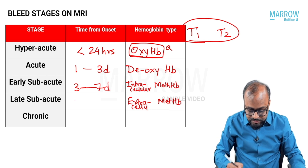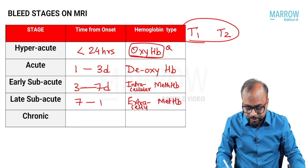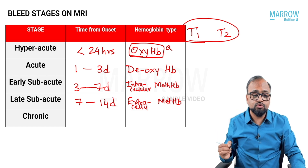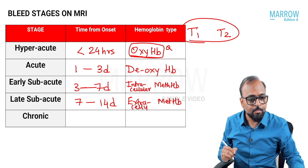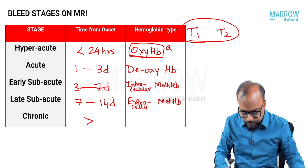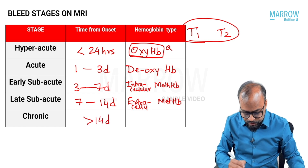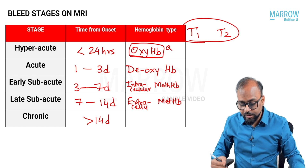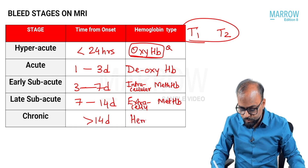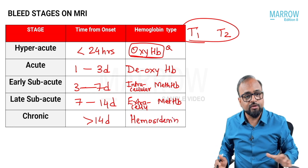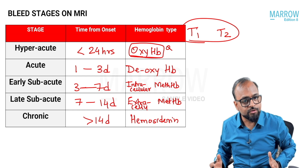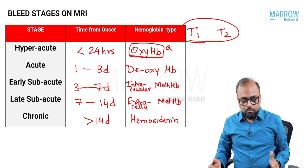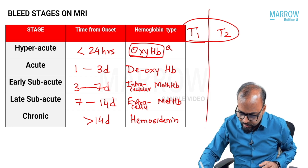As time passes, this intracellular methemoglobin comes outside the cell — this is called extracellular methemoglobin — and this occurs when the duration of the bleed is around seven to fourteen days, called late subacute bleed. If the duration is more than fourteen days, it is called chronic bleed, and the end product of hemoglobin breakdown is hemosiderin, which remains at that site for months to years.